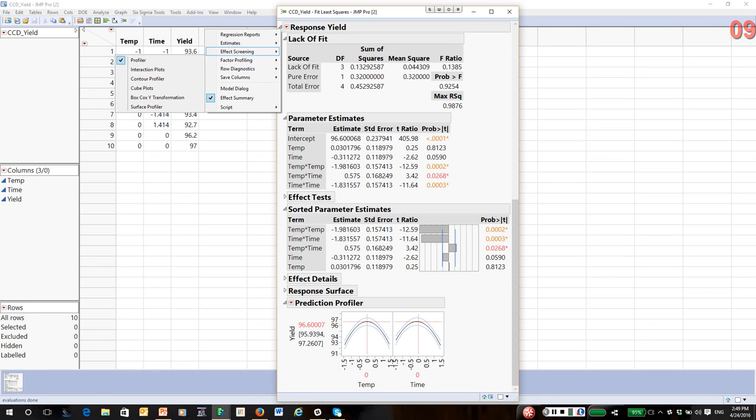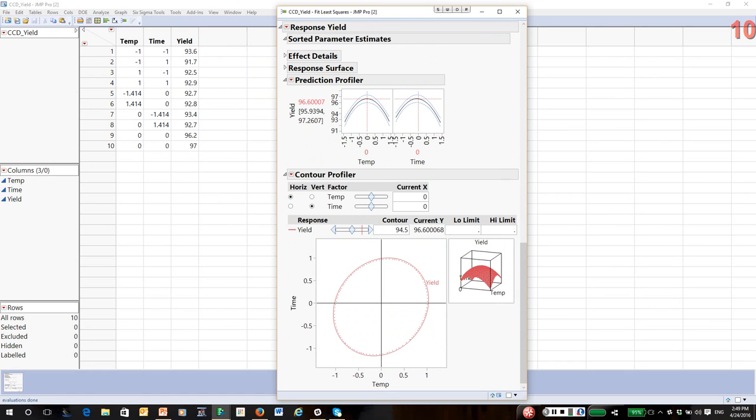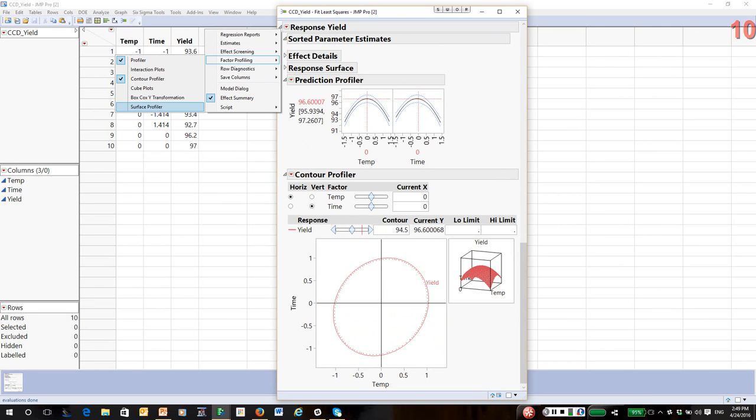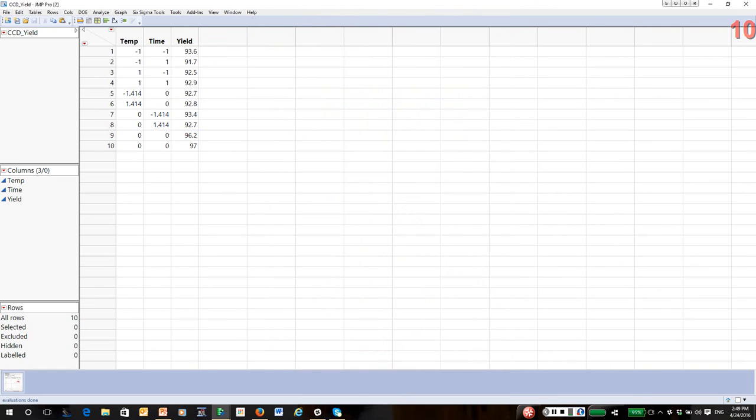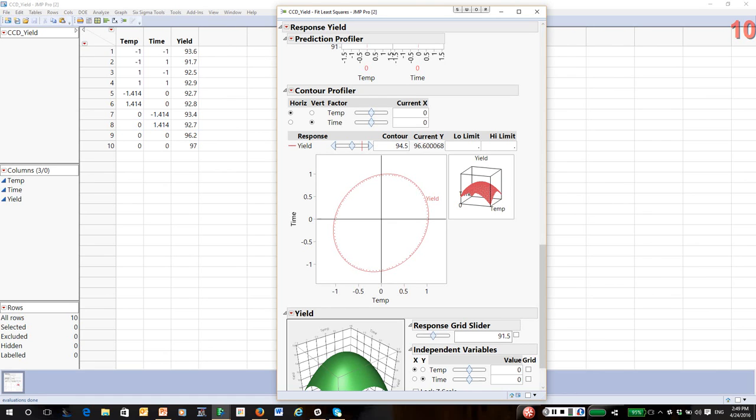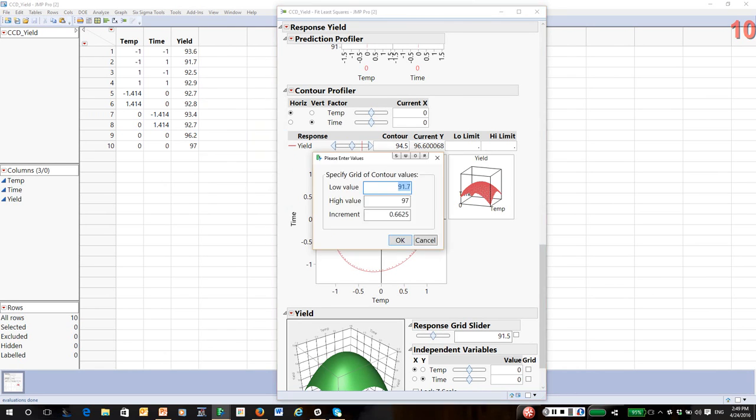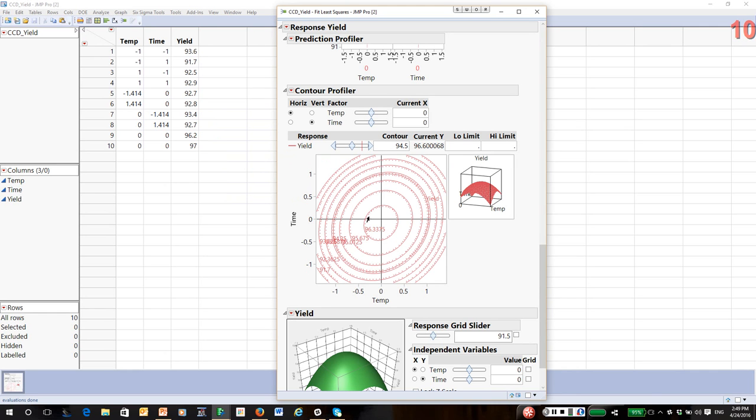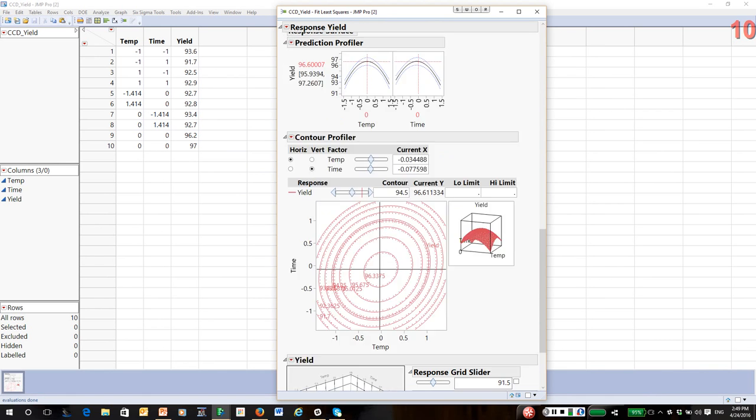A couple of things that are useful under the main report menu. Under Factor Profiling, which means visuals, is a Contour Profiler—that's a top-down view of the response surface. And sometimes people like to look at three-dimensional plots. In the contour profiler, in the report menu for the contour profiler, you can add a grid by selecting Contour Grid. From that, you can see this is a roughly symmetric response surface, and the optimum yield is somewhere right near the center of the surface.